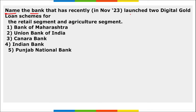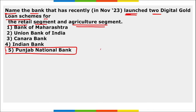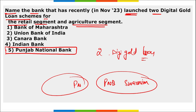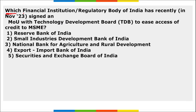Next: name the bank that has recently launched two digital gold loan schemes for the retail and agriculture segments. It is Punjab National Bank (PNB). The two schemes are: PNB Gold Loan for the retail segment, and PNB Swarnim for the agriculture segment.